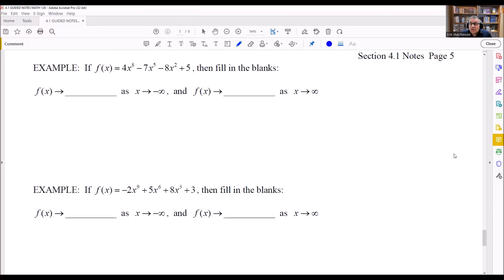On this problem, it says that f(x) = 4x^8 - 7x^5 - 8x^2 + 5. We need to fill in these blanks. What this is referring to is the end behavior that we previously talked about by looking at the end behavior models. That's how you want to fill this in.